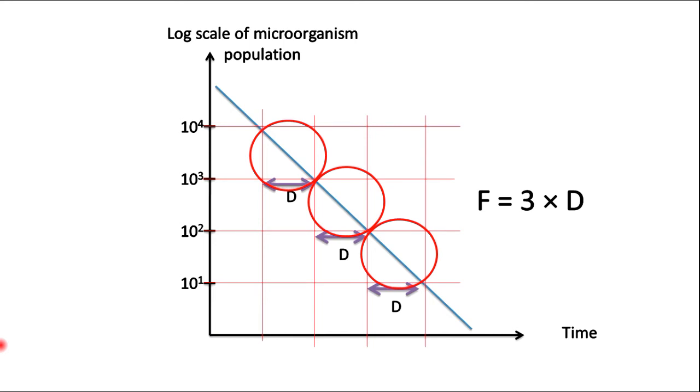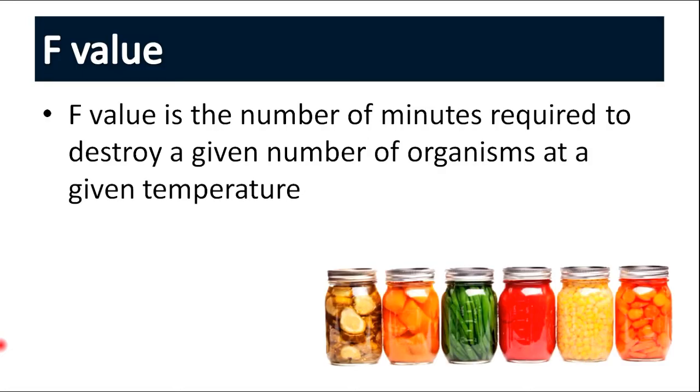So in other words, F is nothing but some multiple factor of D. That means F value is the number of minutes required to destroy a given number of organisms at a given temperature.